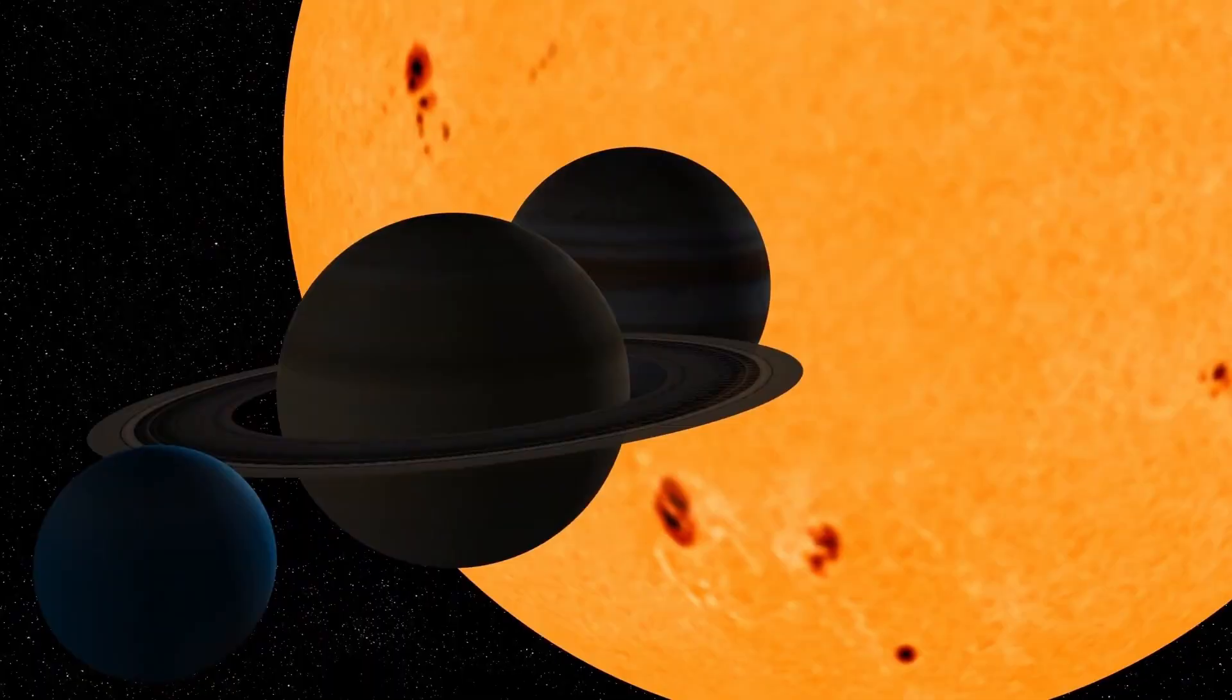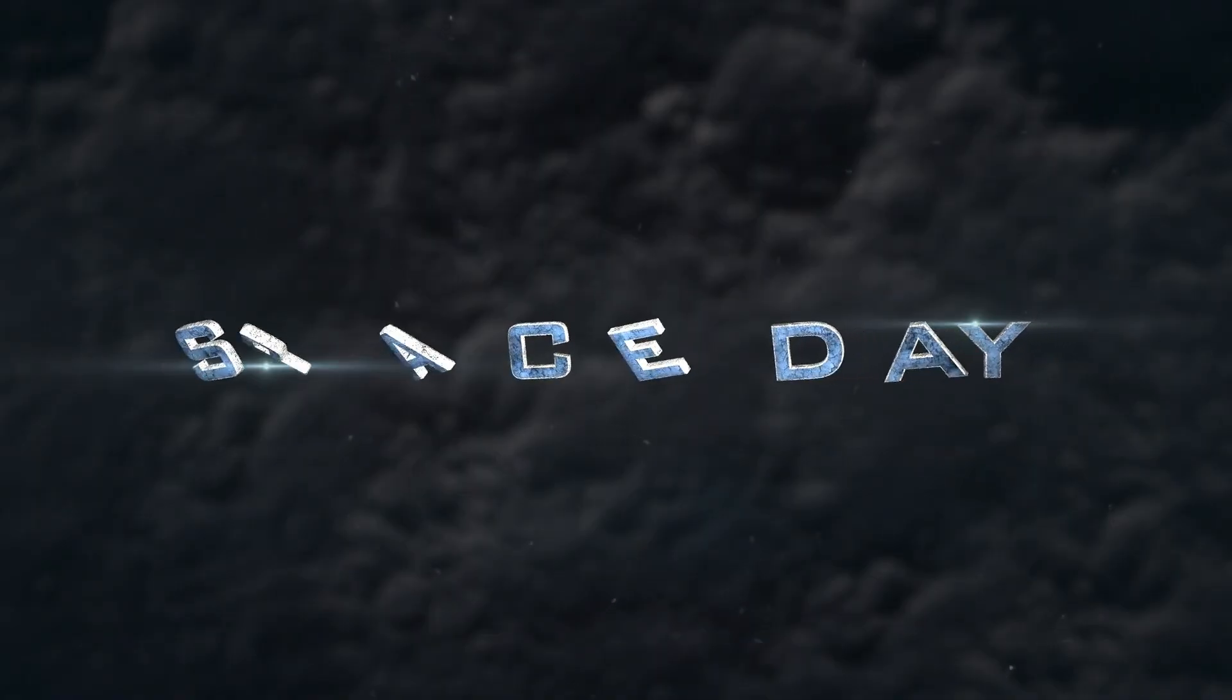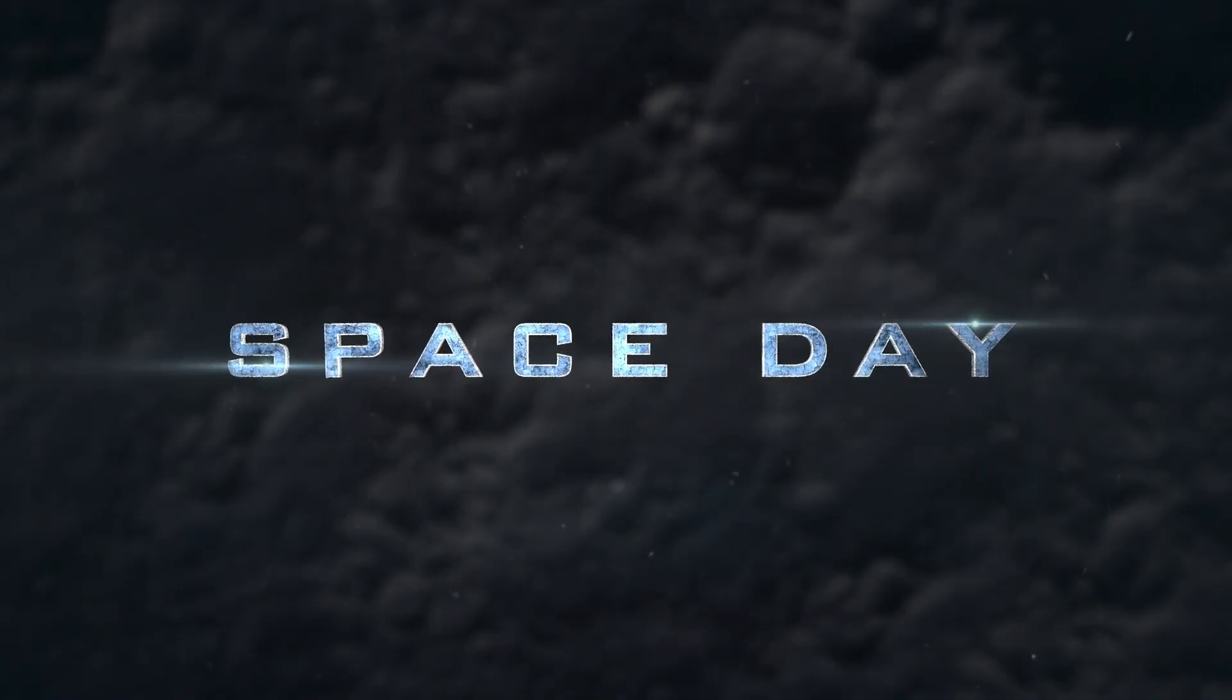Right now, as you're watching this, something extraordinary is racing through our solar system at over 150,000 mph. It's called 3I Atlas, and it came from another star. But here's where things get wild.